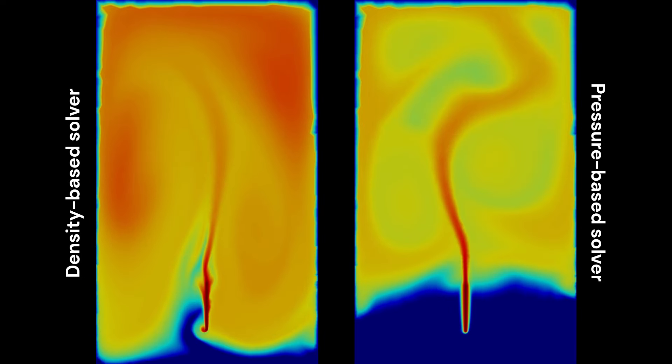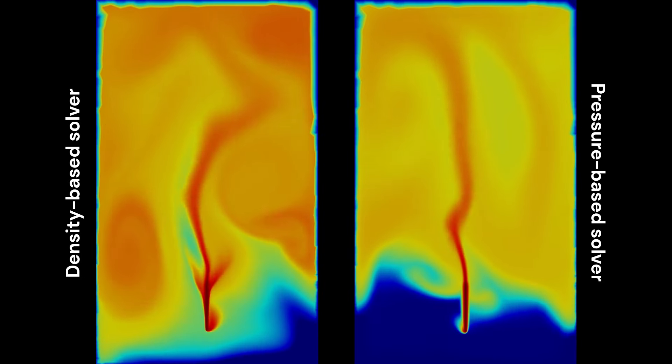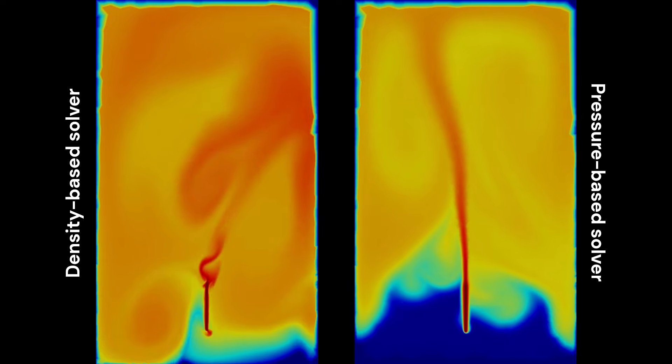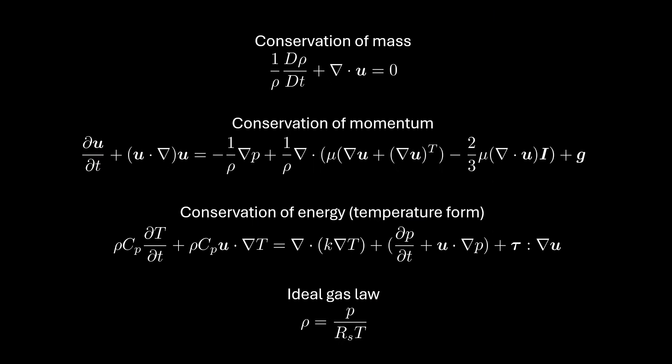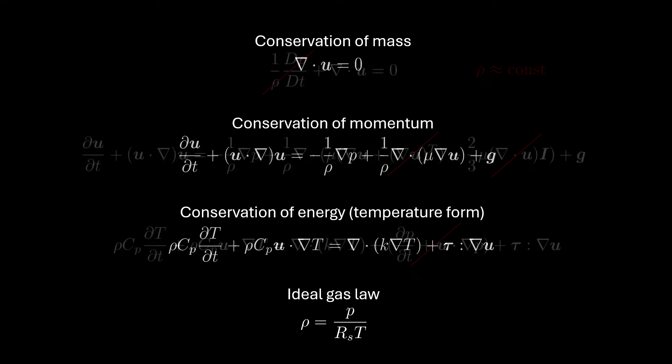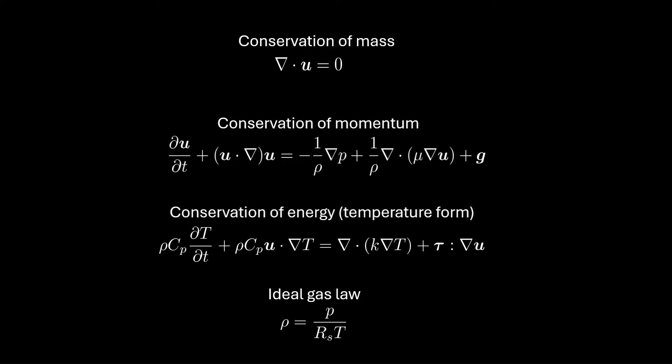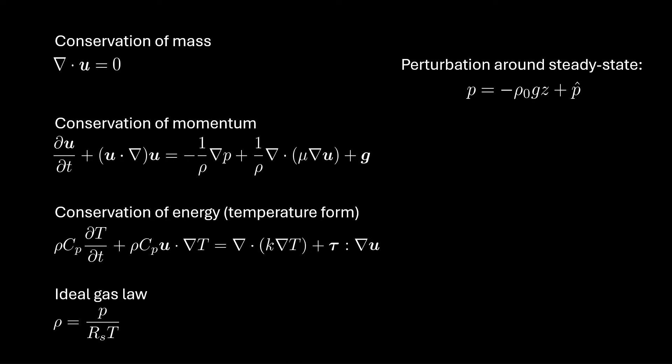Clearly, this lack of robustness is undesirable. An alternative approach is to simplify the earlier compressible Navier-Stokes equations with the Boussinesq approximation, where the density is assumed almost constant. Boussinesq then proposed to view the solution field as a perturbation around a steady-state condition, which is a simple stagnant fluid with a hydrostatic pressure distribution.